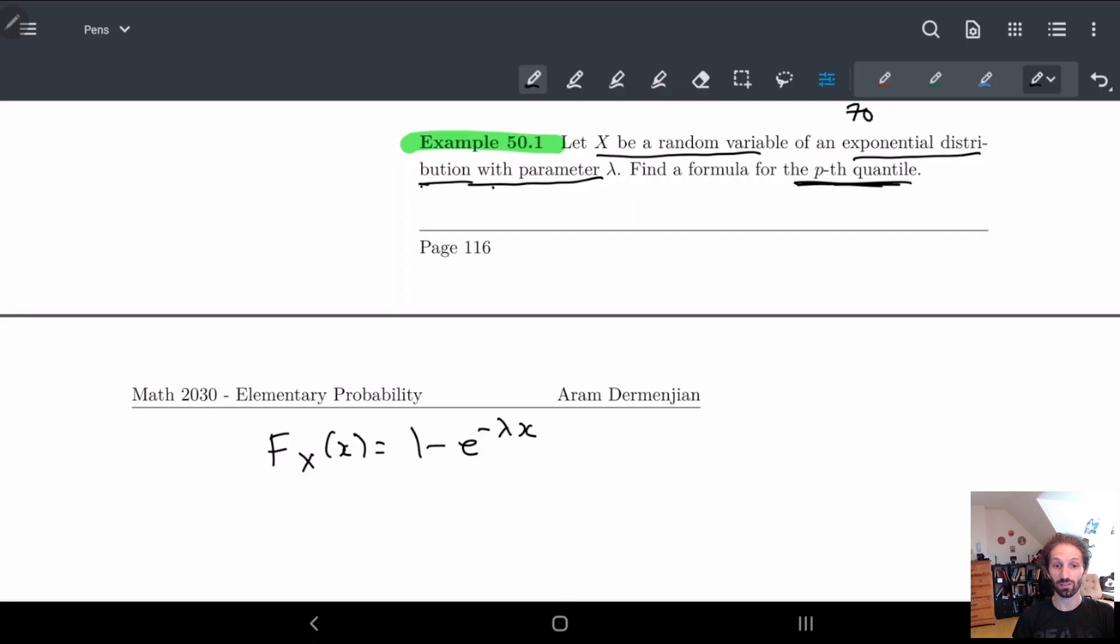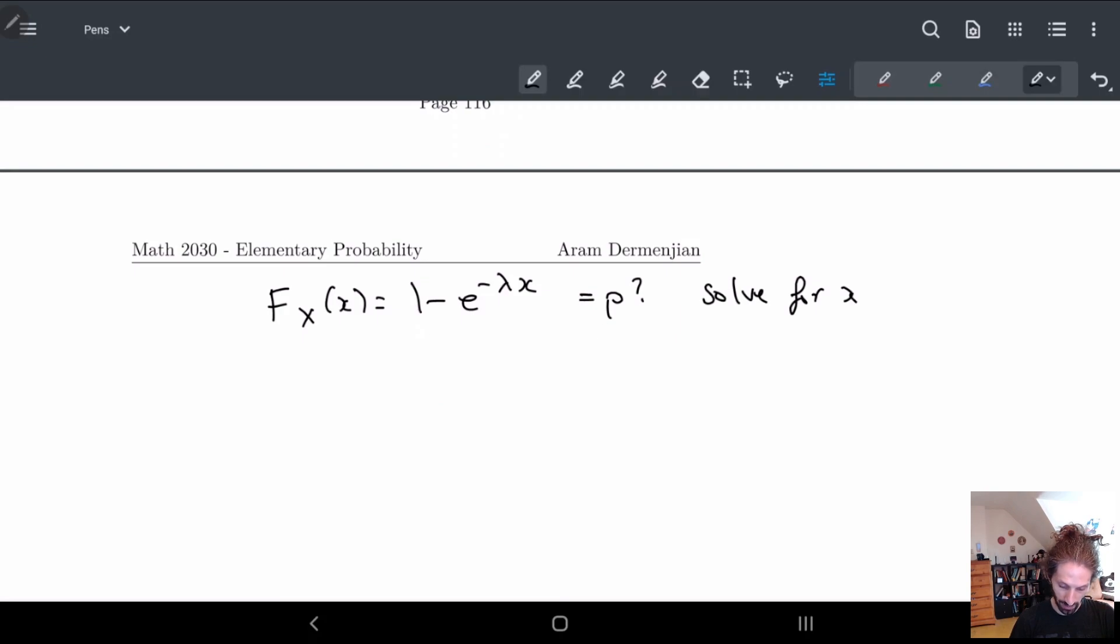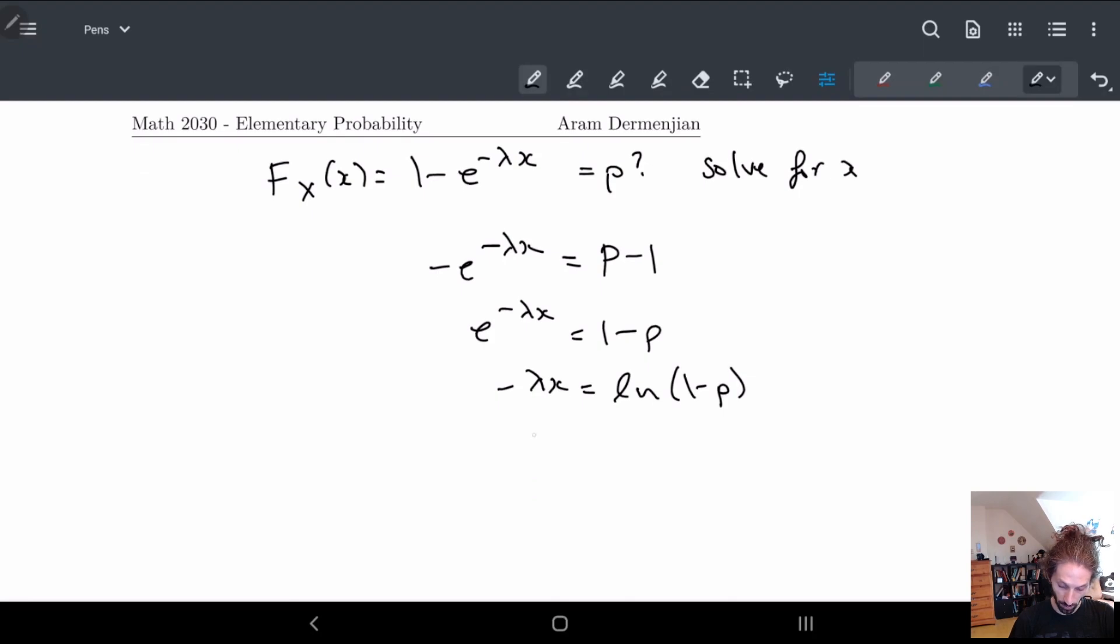The question is now asking to find the converse. So when is this equal to p? Solve for x. Let's do this. I can subtract one from both sides, I can multiply by minus one, I can take the natural log of both sides, multiply by minus one, and then divide by λ.